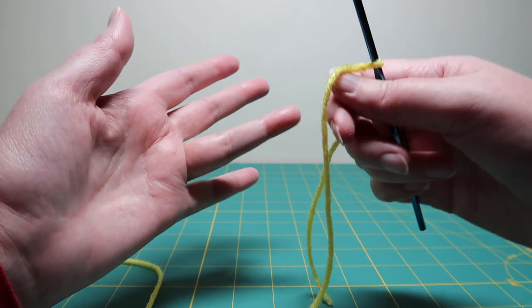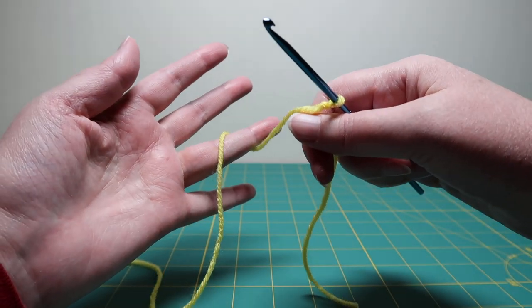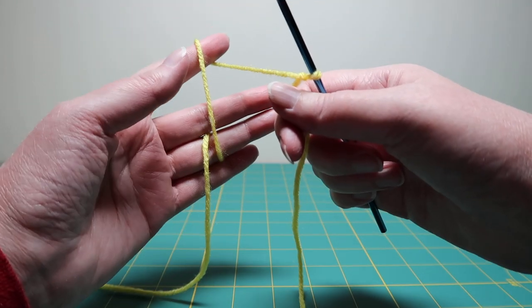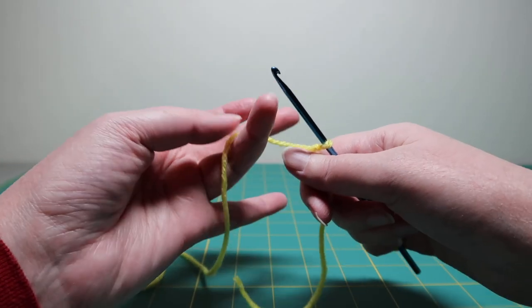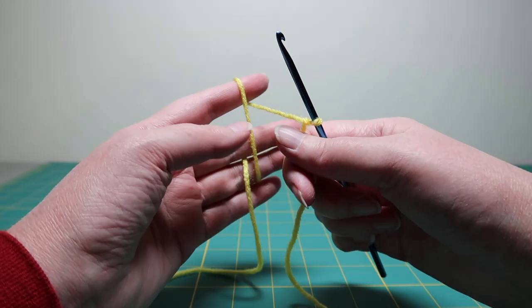And to hold the working yarn, you wrap it around your ring finger and then up over your pointer finger. I'll do that again. Wrap around your ring finger and up over your pointer finger.